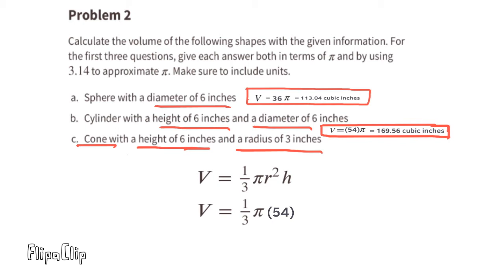In terms of pi, the volume of this cone is 1 third pi times 54. Using 3.14 to approximate pi, the volume of this cone is 56.52 cubic inches. Because 1 third of 54 is 18, and 18 times 3.14 is 56.52.